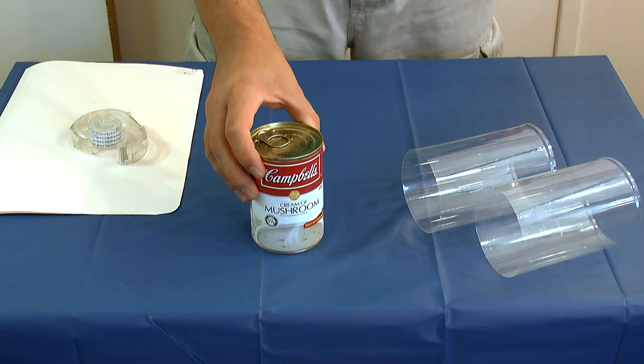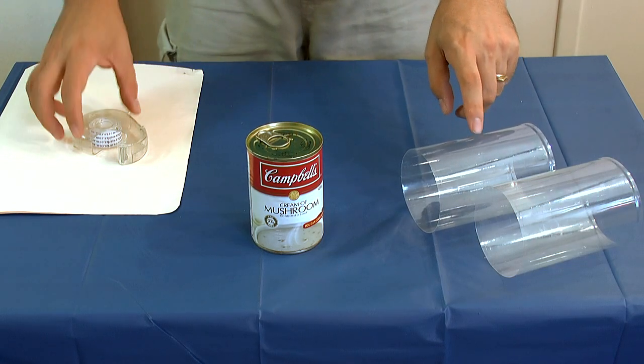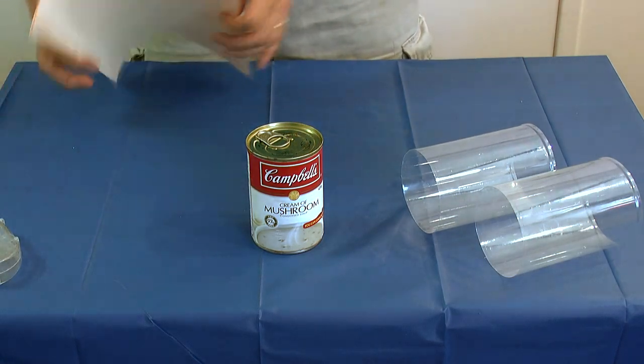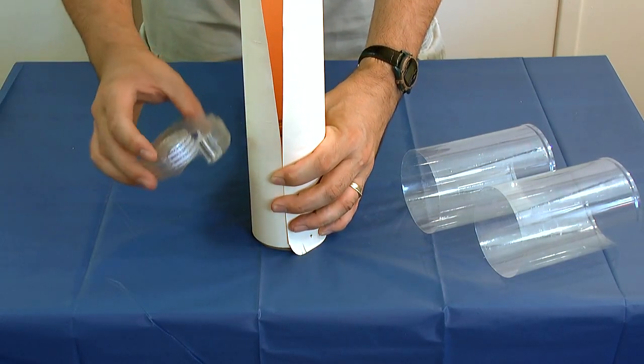Next we need to make an alignment jig. We just use a can that's about the same diameter as the bottles and a mineral folder gets taped around the outside of that.